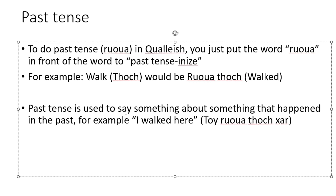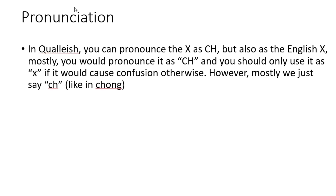Past tense is used to say something that happened in the past. For example, I WALKED here. To do past tense in Kwalish, you can pronounce the X as CH, but also as the English X. Mostly you would pronounce it as CH, and should only use it as X if it would cause confusion otherwise.